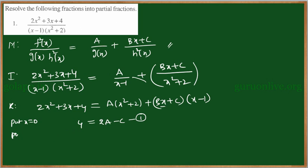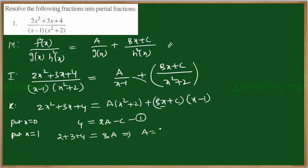Now put x equal to 1. On the left-hand side: 2 plus 3 plus 4 equals 9. On the right-hand side, putting 1 gives (1 plus 2) times A, which is 3A. The (Bx plus C) term becomes zero because (x minus 1) equals 0. So 9 equals 3A, which gives A equals 3.